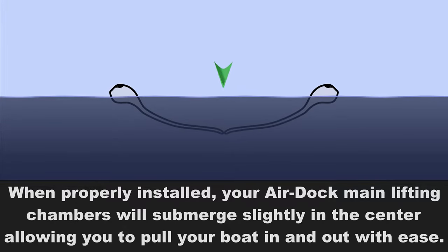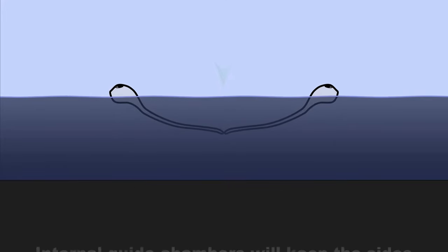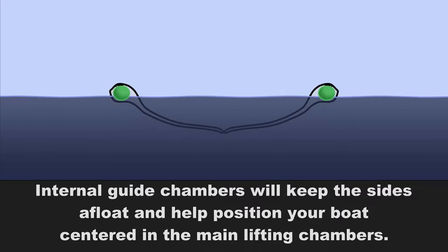When properly installed, your Air Dock main lifting chambers will submerge slightly in the center, allowing you to pull your boat in and out with ease. Internal guide chambers will keep the sides afloat and help position your boat centered in the main lifting chambers.